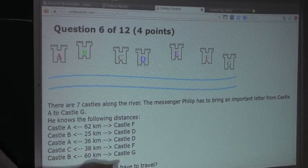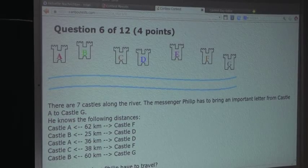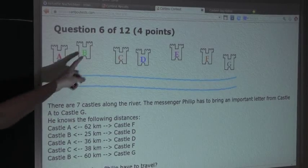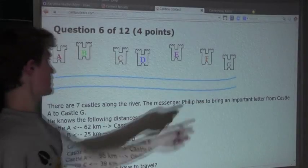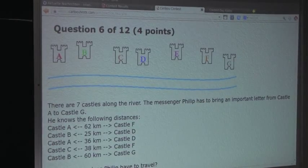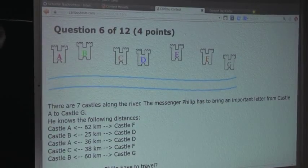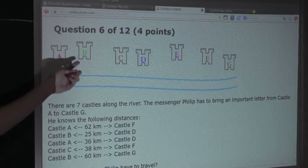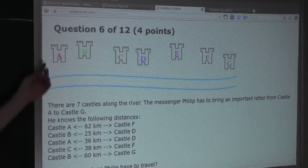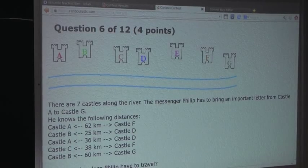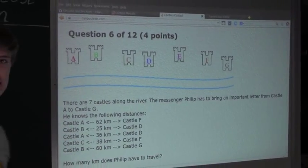Castle B to Castle G is 60 kilometers. So we know from here all the way over here is 60 kilometers. And now, since we have B, we need to use another statement with B and then another statement with A, since A and B are not in the same statement.